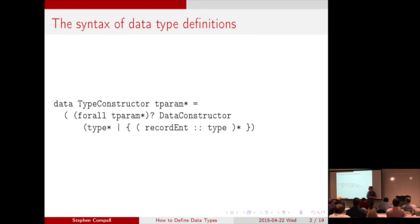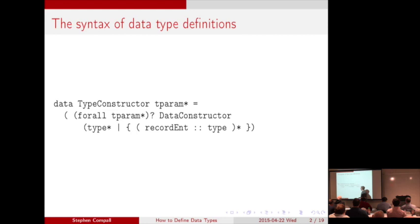And then you give a name for your type, and then maybe some type parameters. And then an equal sign and then one or more data constructors. You have some types that talk about the data you want to put in each data constructor. Or maybe you have braces and the record syntax — which sort of half works in Haskell and isn't great. But either way, you end up with your type definition, and you pretty much have to learn this right away if you're going to do Haskell.